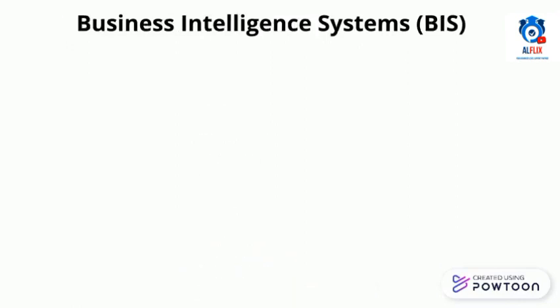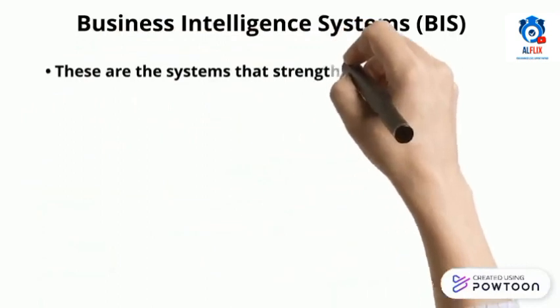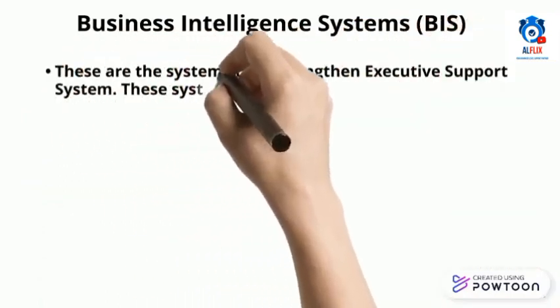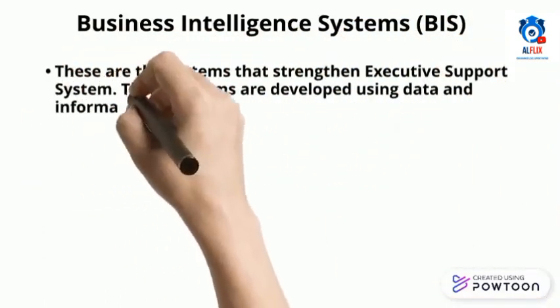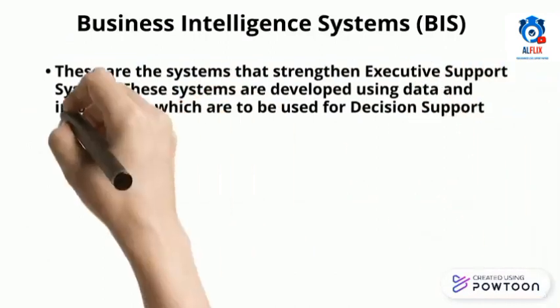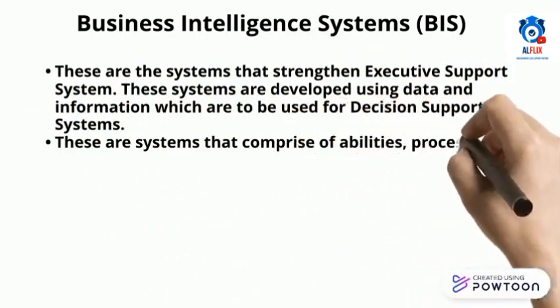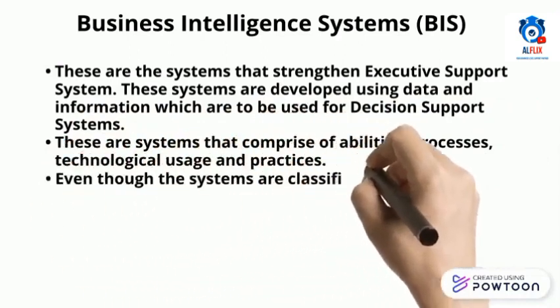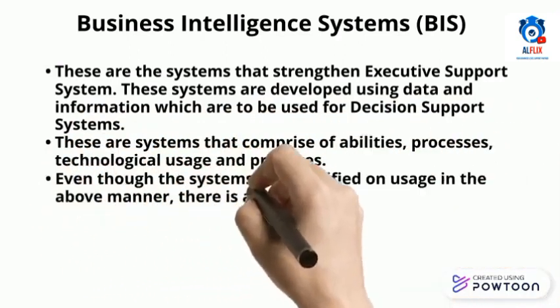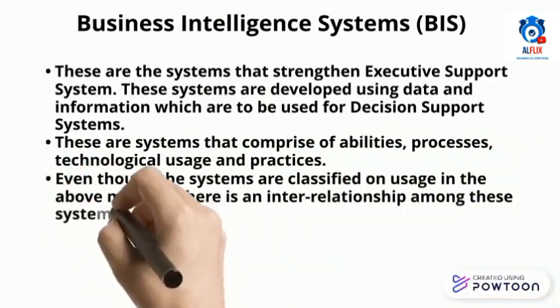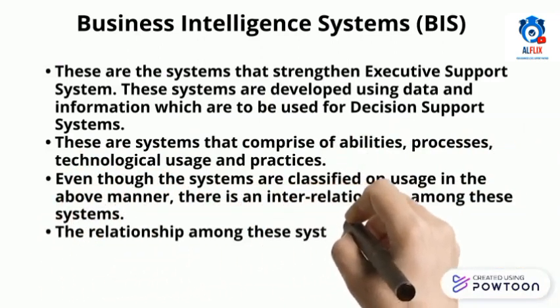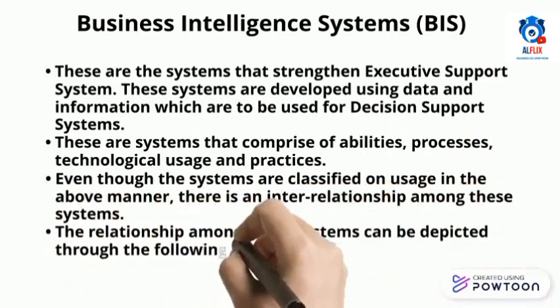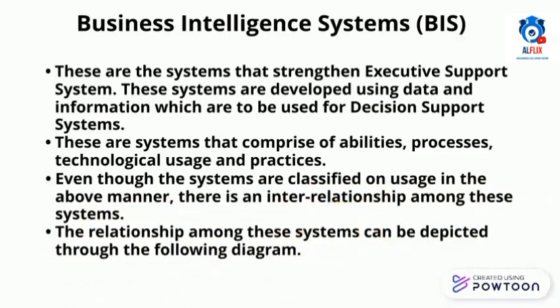Business intelligence systems are systems that strengthen executive support systems. They are developed using data and information that are also used for decision support systems. These systems comprise abilities, processes, technological usage, and practices.